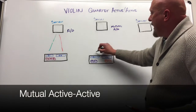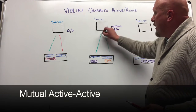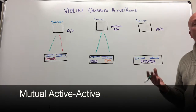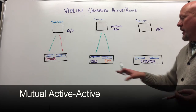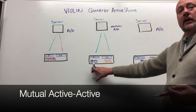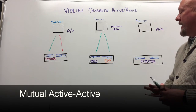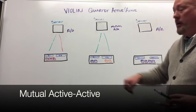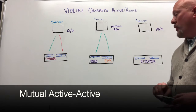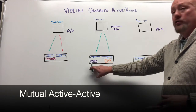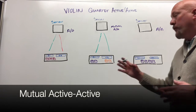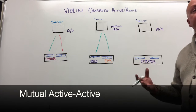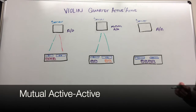In the case of a mutually active-active, both paths are active, but they're only active for the volumes that are controlled by that controller. So in this scenario, if a path were to fail on the first controller, all of those LUNs would have to trespass or fail over to the other controller, which takes that same failover time.